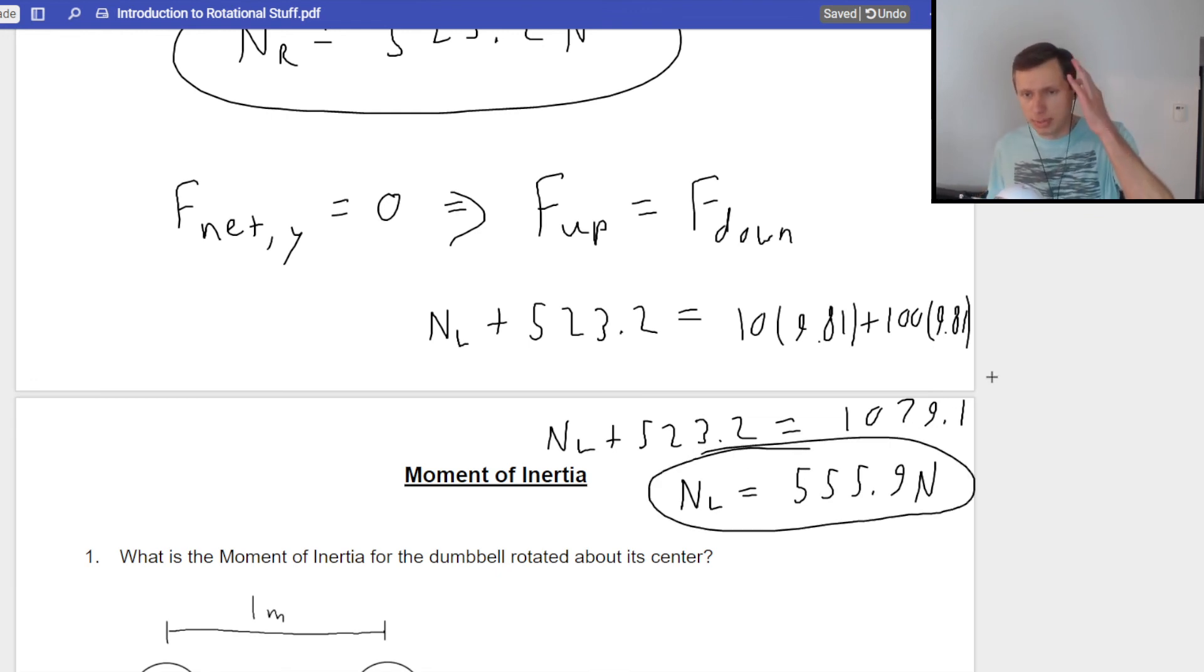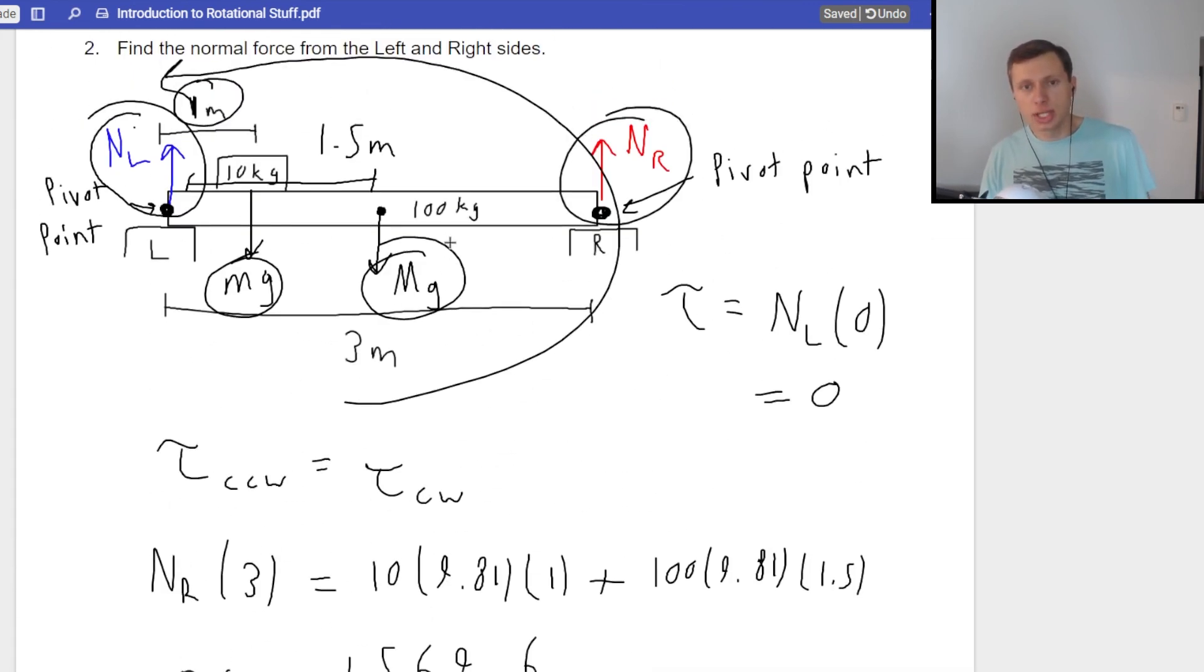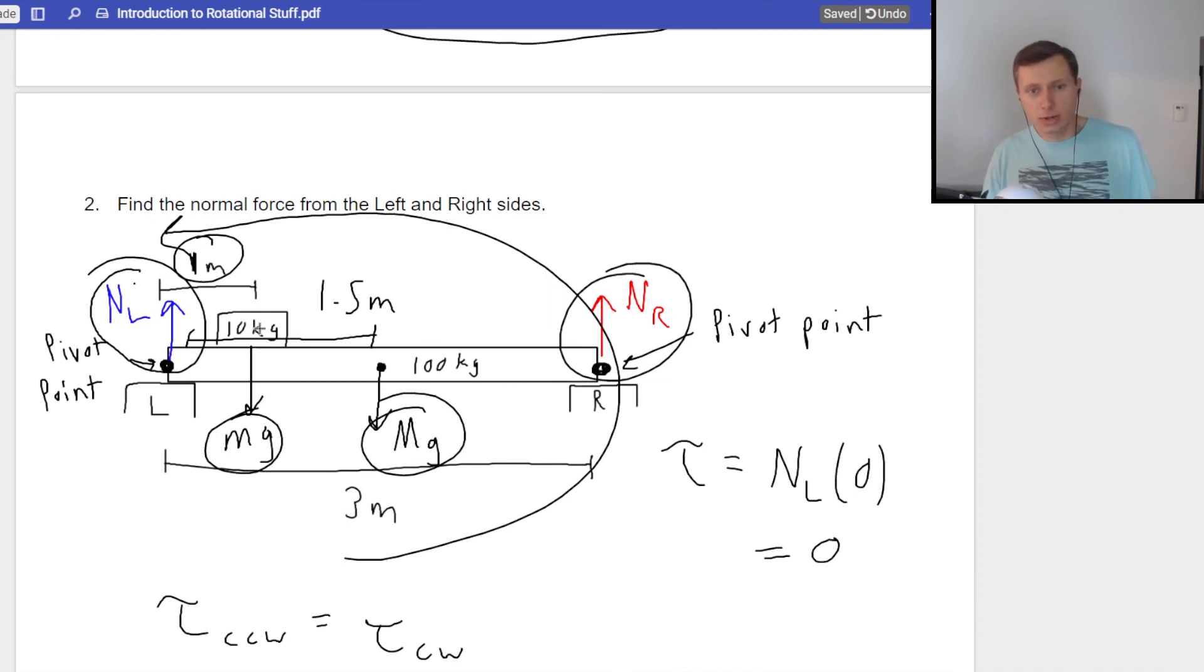Okay, and now one more thing I want to mention. Notice normal force on the left is slightly higher than normal force on the right. Does that make sense? Should they be equal? I'm going to say no, they should not be equal. And just think about this in real life. See this 10 kilogram box here on the left side? Well, the left side should have a higher normal force because that 10 kilogram box is closer to the left side. So just from an intuition perspective, this makes sense.